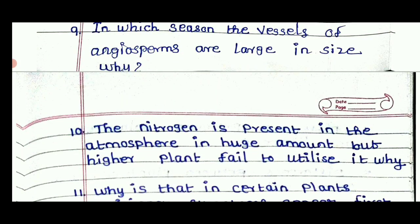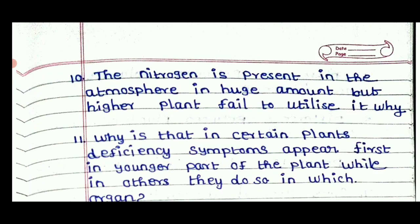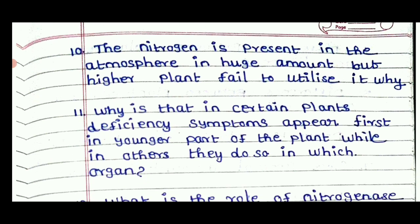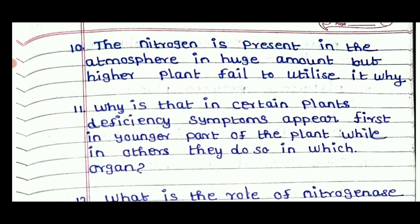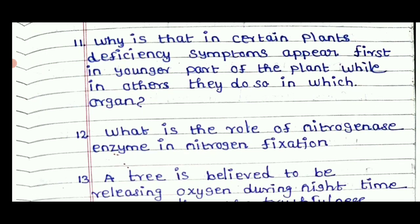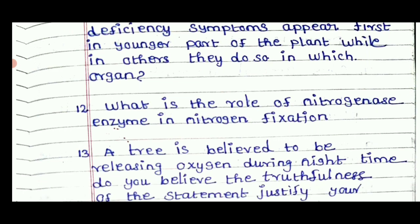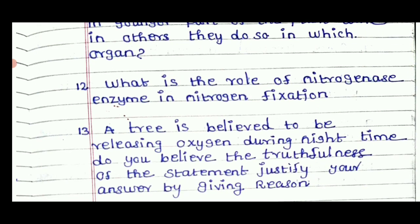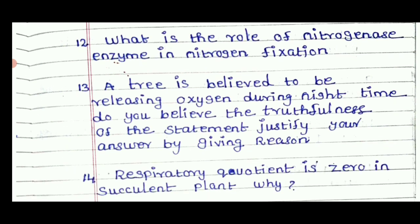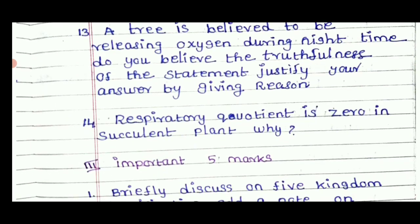Nitrogen is present in the atmosphere in high amounts, but higher plants cannot utilize it. Why? Why do certain plants show deficiency symptoms first in younger leaves or older leaves? What is the role of nitrogenase enzymes in nitrogen fixation? A tree is believed to be releasing oxygen during the night time — do you believe the truthfulness of this statement? Justify your answer. Respiratory quotient is zero in succulent plants — why?